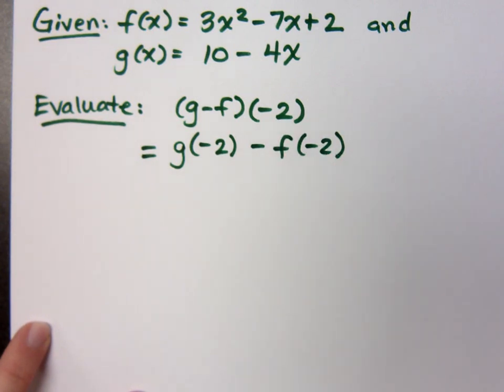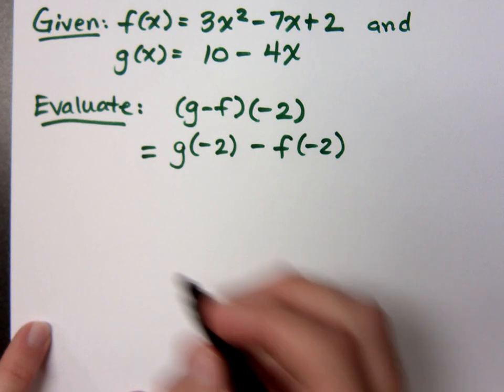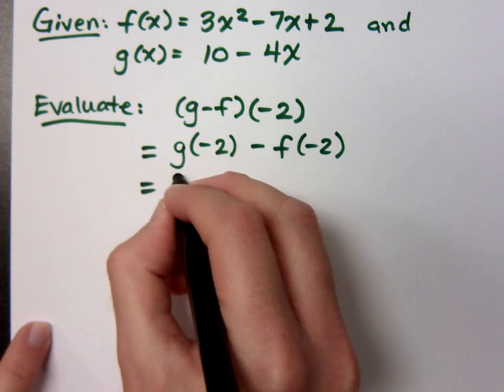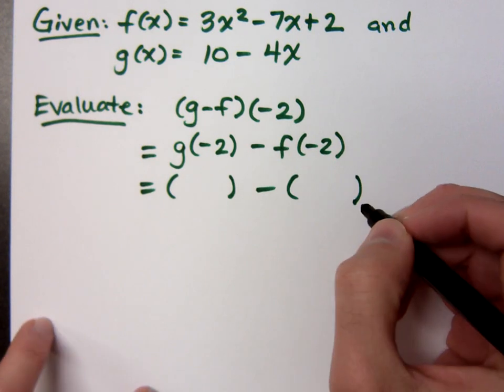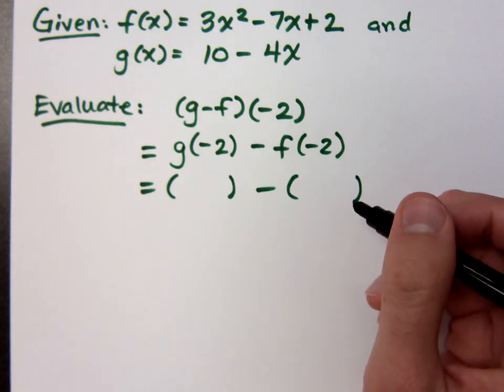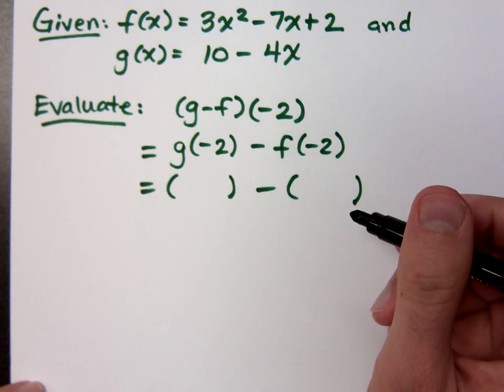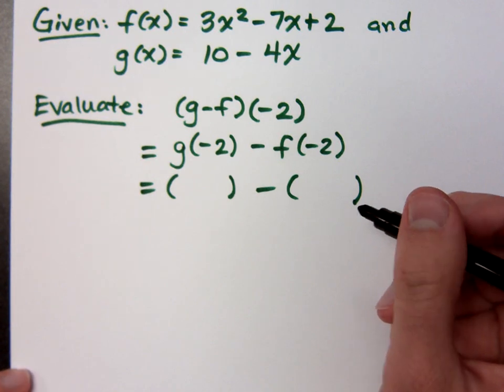Now, when you evaluate each of these, you should come up with two numbers. I'm just going to make it easy for you. We're going to put those numbers in parentheses like this. Okay. Now, to figure out what is g of negative 2 and what's f of negative 2, you may need to go off to the side, or you may be able to look at it and figure it out.